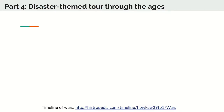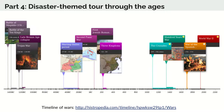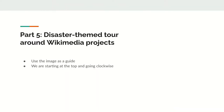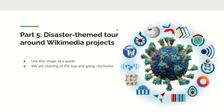Similarly, this timeline of wars that humanity has engaged in can be explored in a self-guided fashion. You just follow the link, zoom into the visualization, and click your way through to images or Wikipedia articles about particular wars. What is less easy to do in a self-guided fashion is figure out where disaster-related content sits across all these different projects, and that is the tour we will now do together.